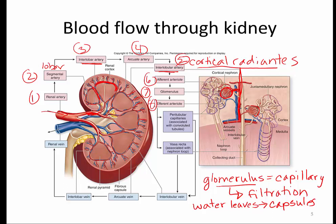After the efferent arteriole, blood goes to a second capillary bed. These are called peritubular capillary beds, woven around the nephron. For the special juxtamedullary nephrons, these are called vasa recta, meaning straight vessels — but both are the second capillary bed. Blood then drains into the interlobular vein, then the arcuate vein, then the interlobar vein, and straight into the renal vein. There are no segmental or lobar veins.